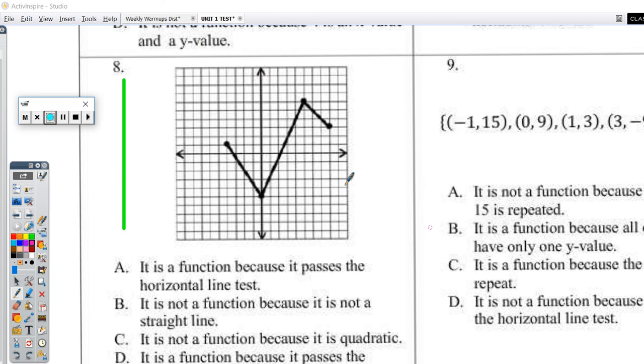Question 8. We want to see which answer choice is true. Let's look at answer choice A. It is a function because it passes the horizontal line test. A horizontal line looks like this. In Algebra 1, we do not do anything called a horizontal line test.